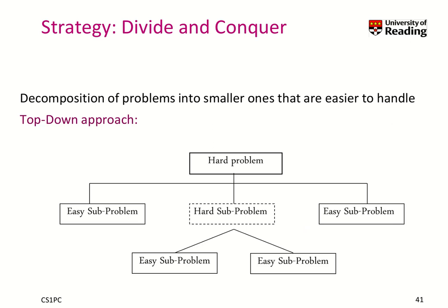Divide and conquer — that is absolutely an awesome strategy. You decompose a problem into smaller ones that are easier to handle. Imagine you have a very hard problem. One hard problem could be: I want to learn programming. Learning programming might be so hard to think about that you can't imagine how to solve it. But maybe you can break down this problem into easier sub-problems. One sub-problem could be understanding how algorithms work, because they are the foundation of programming. Another sub-problem might be understanding a programming language like C.